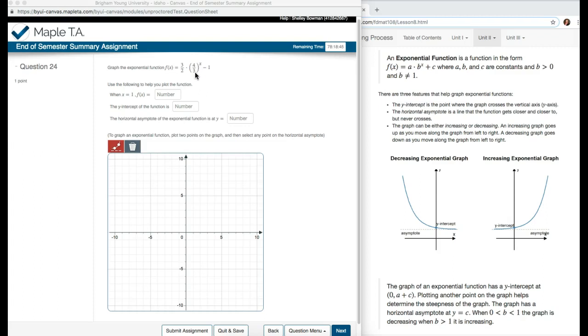So we need to simplify 4 thirds times 3 halves. We can simplify first by crossing out the 3s, and then 4 divided by 2 leaves me with 2. So then it's 2 minus 1, which is 1.